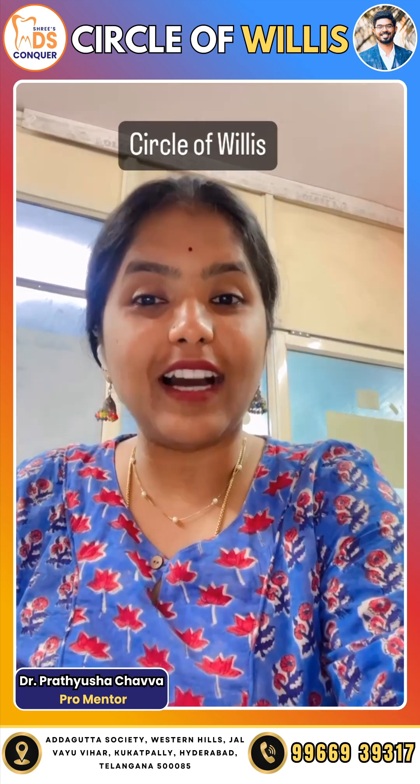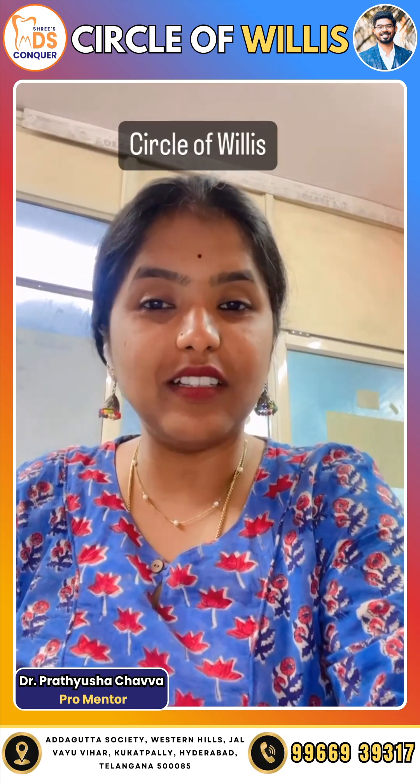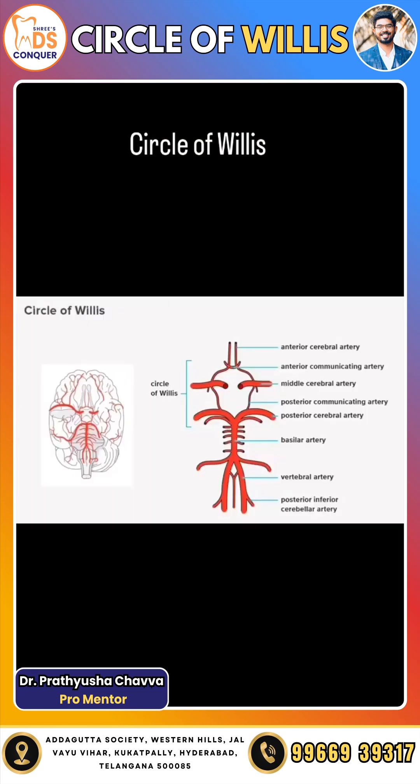Now, what are the arteries that form the Circle of Willis? Let's see. The Circle of Willis is formed by five major arteries: the anterior cerebral, anterior communicating, middle cerebral, posterior communicating, and posterior cerebral artery.